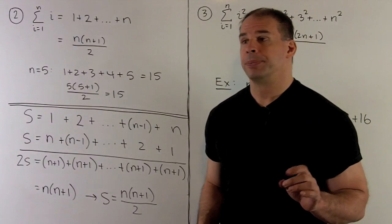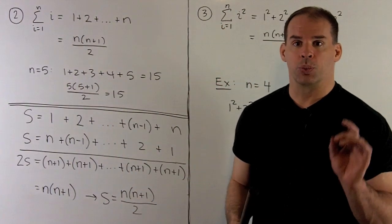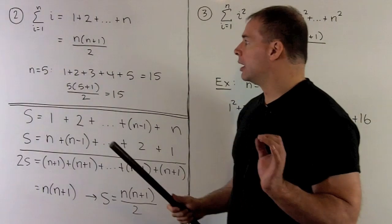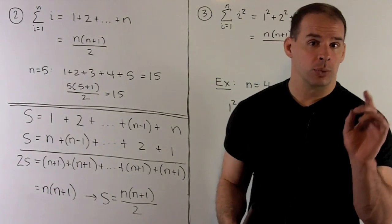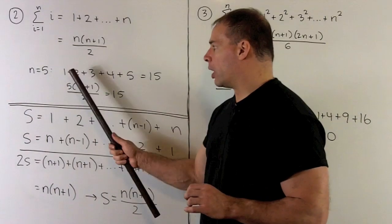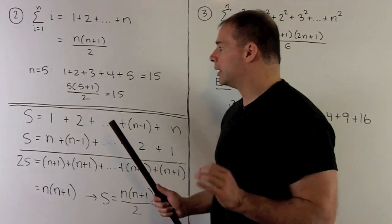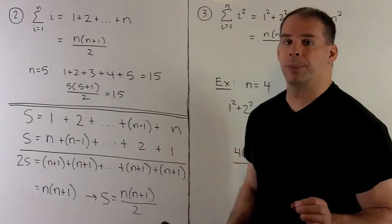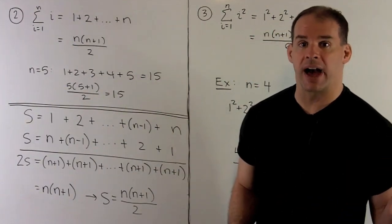The next formula is the sum as i goes from 1 to n of i — just 1 plus 2 plus 3 all the way up through n. The formula is n times n plus 1 over 2. Let's check the special case n equals 5: 1 plus 2 plus 3 plus 4 plus 5 gives 15. Using the formula, 5 times 6 over 2 equals 30 over 2, which is 15. That checks out.